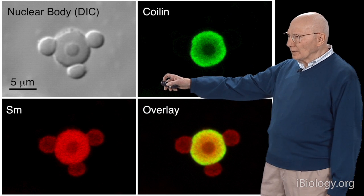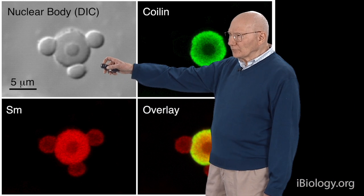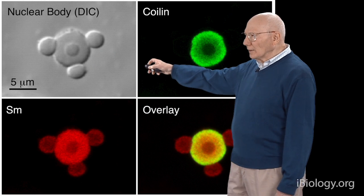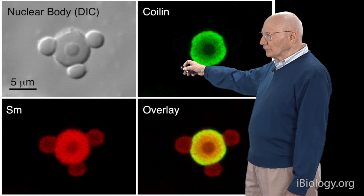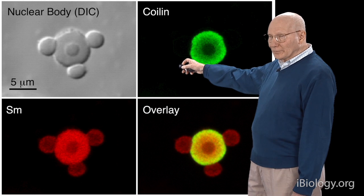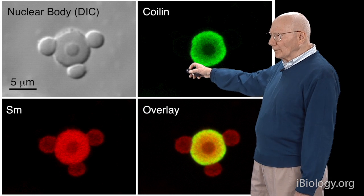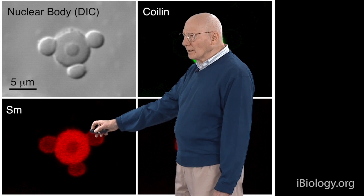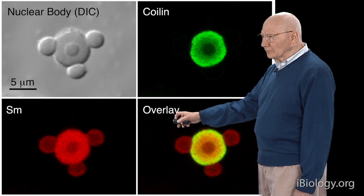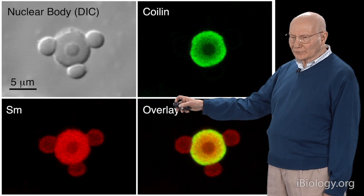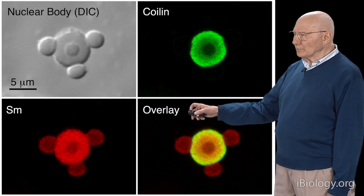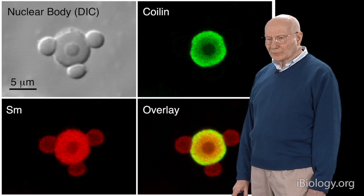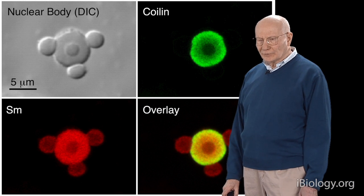Shown here is a modern image. This is a nuclear body from a salamander oocyte. Here it shows immunostaining with an antibody against the protein coilin. Here is immunostaining with an antibody against an SM protein. This is a slide which I made more recently using the Kuhns and Kaplan technique. The point, however, is that they had shown that it was possible to detect specific protein molecules in tissues.